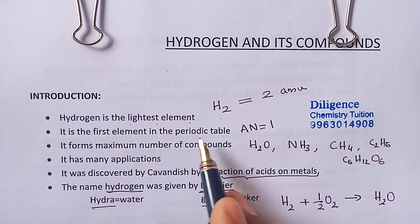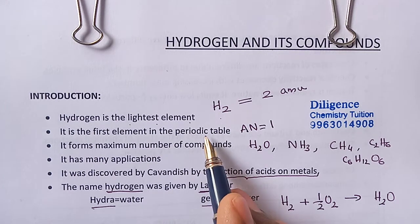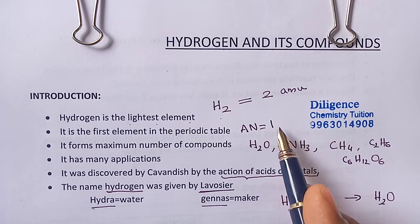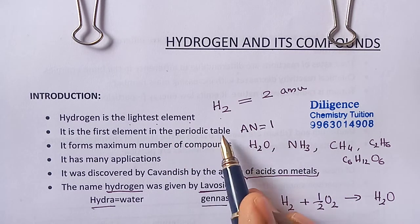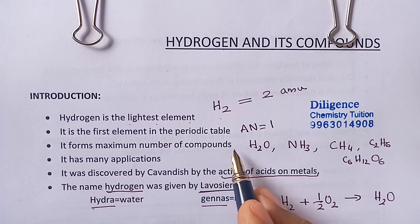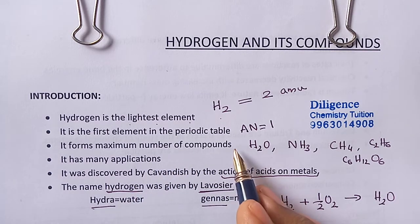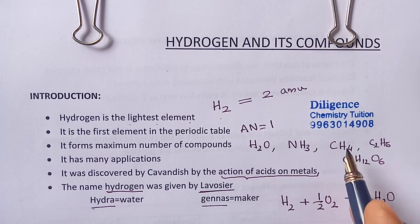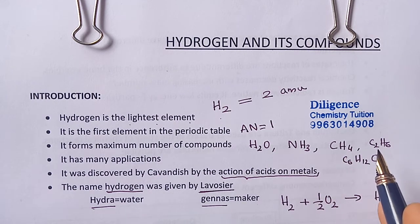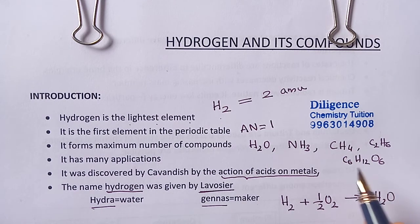Hydrogen is the first element in the periodic table because its atomic number is 1. It forms the maximum number of compounds — for example, H2O, NH3, CH4, and many other compounds contain hydrogen.